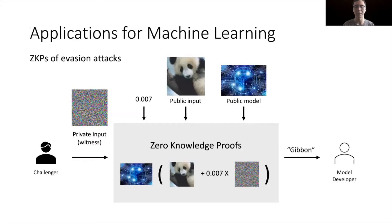These two parties can use this zero-knowledge proof to demonstrate the evasion attack. The witness of the challenger is a private image. They also have public inputs: the original image and the model. The challenger proves in zero-knowledge that it knows a perturbation of this image that can cause the model to output a wrong label, and then the model developer believes there is a bug in this model.